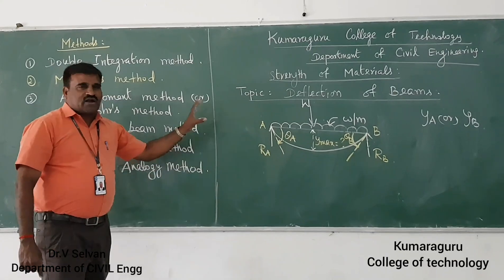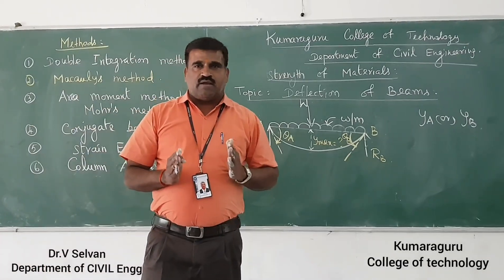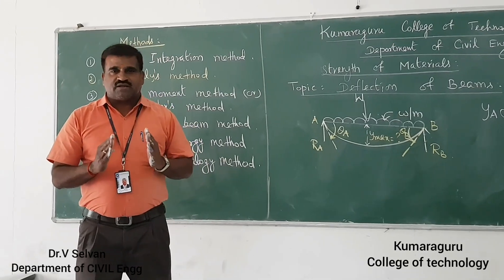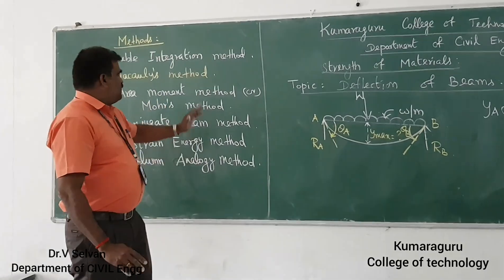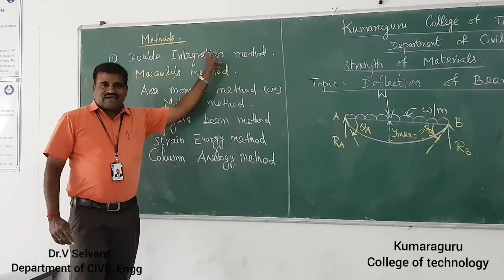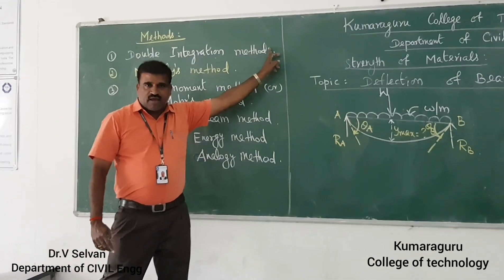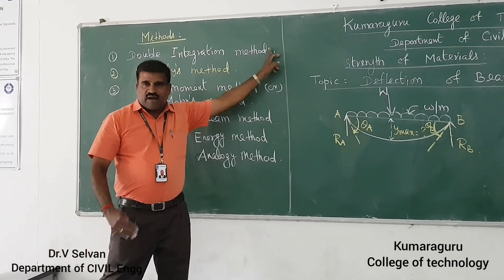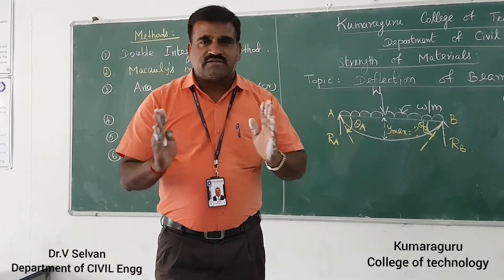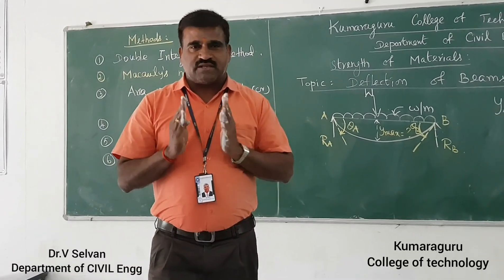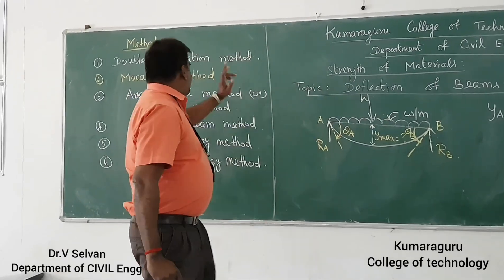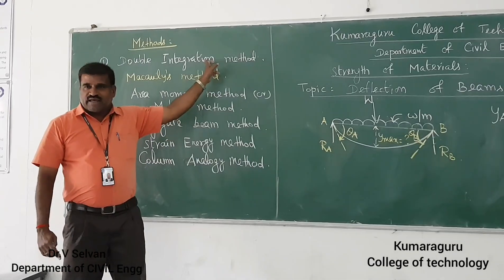First, I will explain what methods are available to find the deflection of beams. There are normally four methods that are generally used. The first important method is called the double integration method. It is the simplest method, but you can use it only for simple loading and continuous loading. If the load is discontinuous, you cannot use this first method.